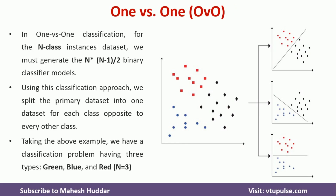Now the next classifier approach for multi-class classification is one versus one. In this case, for a dataset with n classes, we generate n × (n − 1) / 2 binary classifier models. For example, if n equals 3, that is 3 × 2 / 2 = 3 classifier models. If n equals 4, that is 4 × 3 / 2 = 6 classifier models. Each classifier is built on only the subset of data containing two class labels at a time — it is 1 versus 1, not 1 versus all.